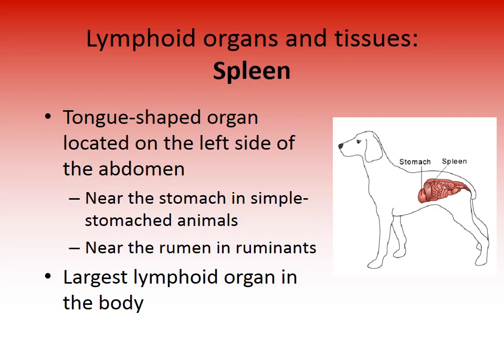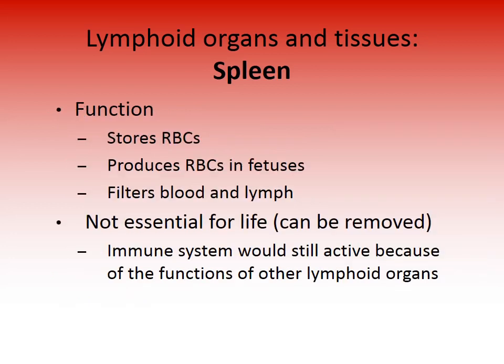The spleen is a tongue-shaped organ located on the left side of the abdomen, near the stomach in monogastric animals and near the rumen in ruminants. It is the largest lymphoid organ in the body. The spleen stores red blood cells, produces red blood cells for the fetus, and filters blood and lymph. It is not essential for life — a splenectomy can be performed — and the rest of the immune system will compensate.